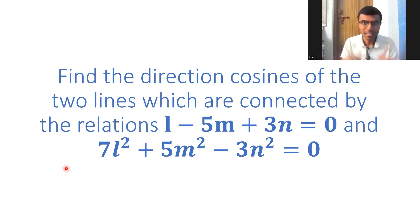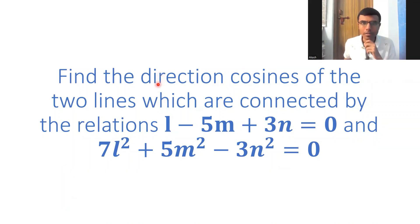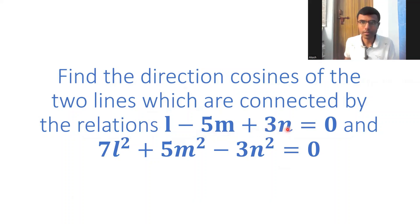Hello learners, I'm Akash. I completed my B.Tech from NIT Rourkela in the year 2020. Currently I'm a mathematics teacher. Now let's see how to solve this given question. Here we need to find out the direction cosines of two lines which are connected by the relations l minus 5m plus 3n equal to 0 and the other relation.